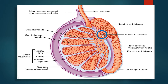The rete testis empties into the efferent ductules and then goes to the head of the epididymis. Once in the head of the epididymis, sperm passes from the head to the body to the tail. Viable sperm can be stored in the tail of the epididymis and the vas deferens for several months.